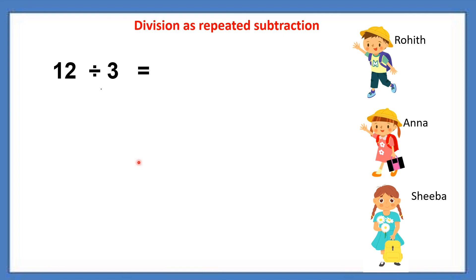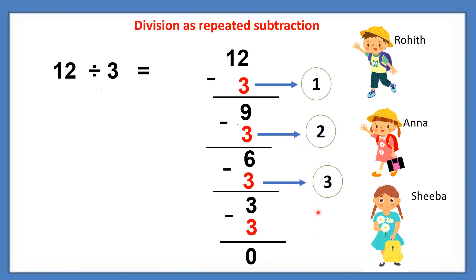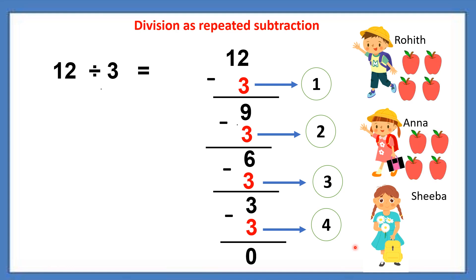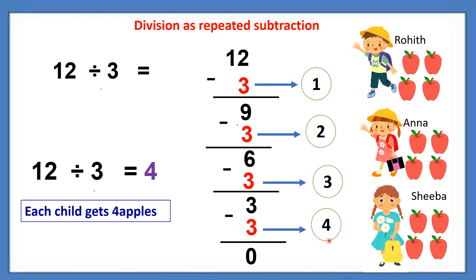Now we will see the same thing vertically. 12 divided by 3 — in one page, we will see how it comes by repeated subtraction. That means we have to subtract 3 from 12 so many times — till we get 0. Let's see: 12 minus 3 is 9. Are we going to stop? No. Again minus 3 is 6. 6 minus 3 is 3. Again minus 3 is 0. We repeat the subtraction till we get 0. How many times have we subtracted? 1, 2, 3, 4 times. That means each person got 4 apples — the same as we saw in the previous slides. 12 divided by 3 is 4. How many times we are subtracting — that will be our quotient.